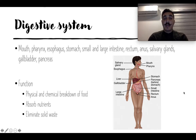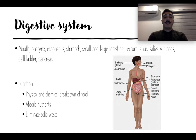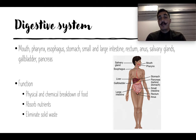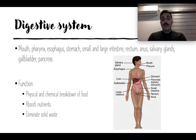The digestive system mainly digests everything we take into our body. It includes the mouth, pharynx, esophagus, stomach, small and large intestine, rectum, anus, salivary glands, gallbladder, and pancreas. Its main functions are breakdown of food, absorbing nutrients, and eliminating solid waste.